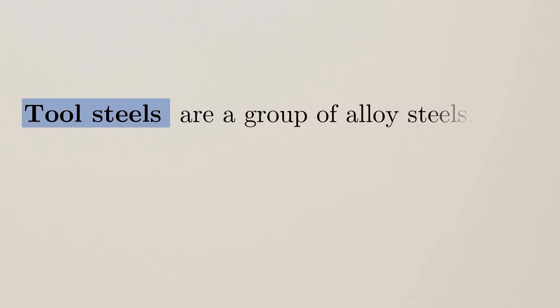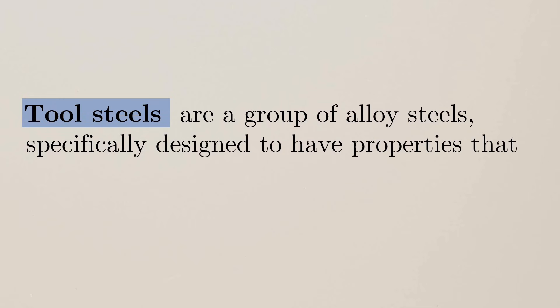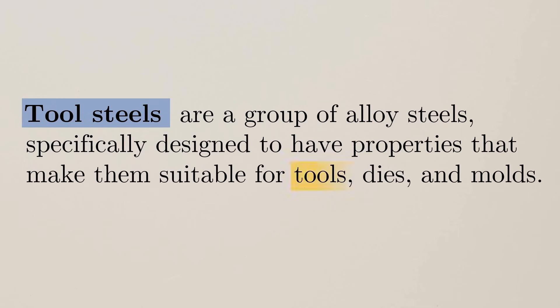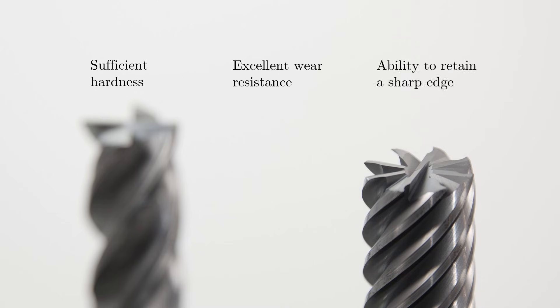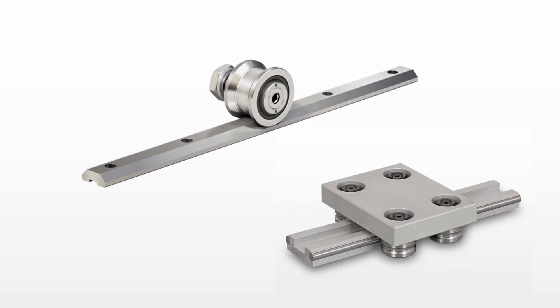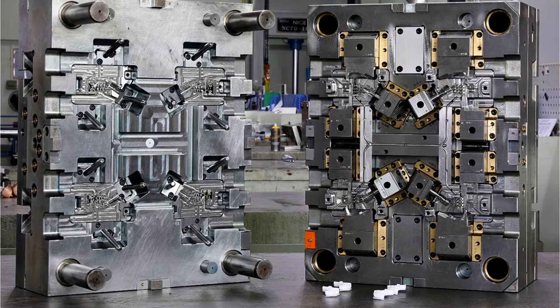Tool steels are the group of alloy steels especially designed to have properties that make them suitable for tools, dies, and molds. They offer sufficient hardness, excellent wear resistance, and ability to retain a sharp edge at elevated temperature. This doesn't mean that tool steels are only limited to tool design — they are also used in general applications where wear resistance and dimensional accuracy is critical.